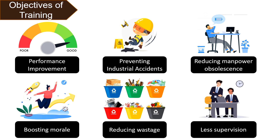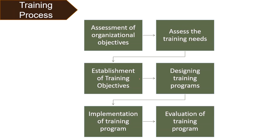Less supervision — a trained person needs less supervision than an untrained one. Talking about the training process: first, assessment of organizational objectives takes place. Next, you assess the training needs. After that, training objectives are established, then training programs are designed. After that, the training program is implemented, and at the end, the training program is evaluated.